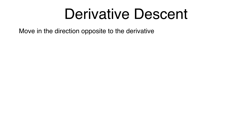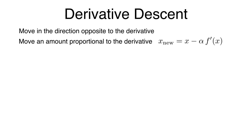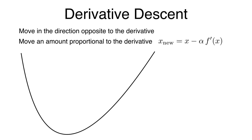This leads us to an algorithm called derivative descent. We move in the direction opposite to the derivative, and we move an amount proportional to the derivative. The expression is: our next point x_new equals our current point x minus alpha times the derivative f'(x). Alpha is our constant of proportionality — called the learning rate — and we get to choose it. Starting from our first guess, the derivative points left, so we move right. We evaluate the function at that new point, and again the derivative points left, so we move right again. We quickly find the bottom of the function.